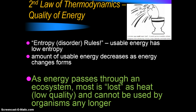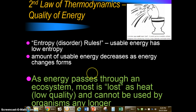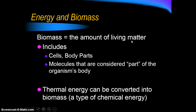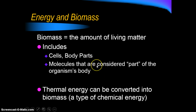Energy and biomass are interrelated. Biomass is basically the amount of living matter in an ecosystem — this includes all parts of an organism like their cells, body parts, and any molecules considered part of their body. This is a form of chemical energy, and thermal energy from the Sun and other places can be converted into biomass. In food chains, organisms take that thermal energy and convert it into chemical energy to build their bodies.